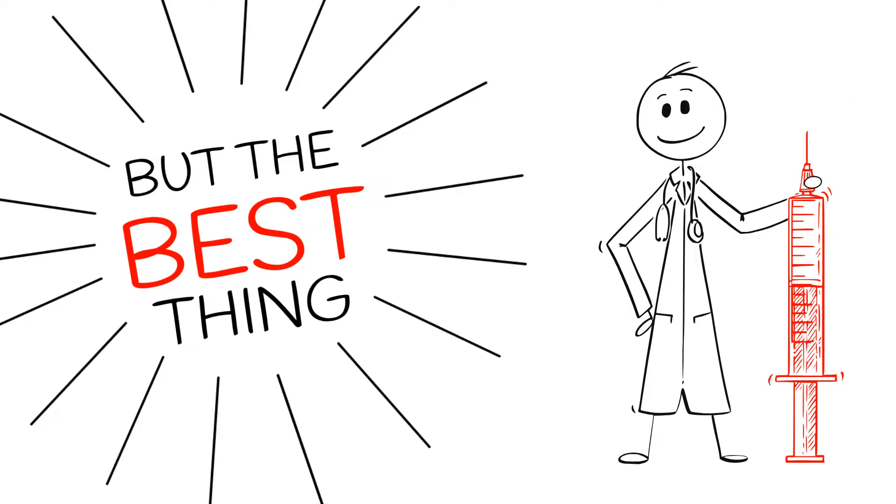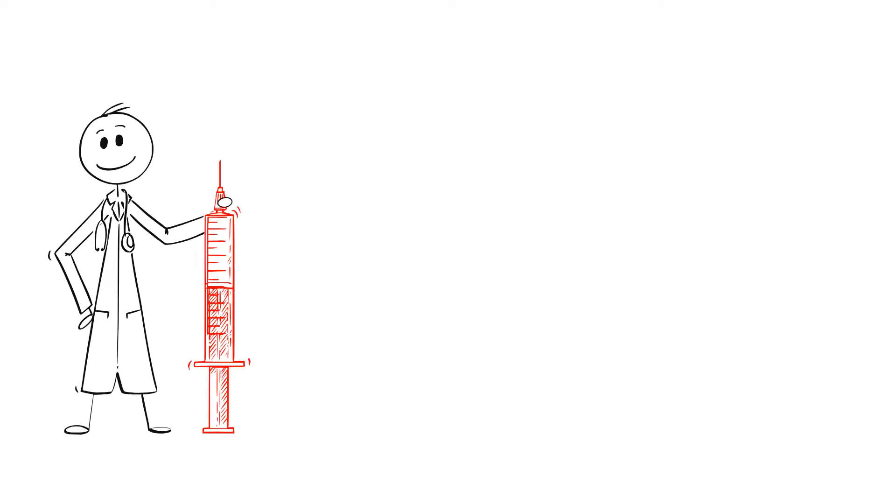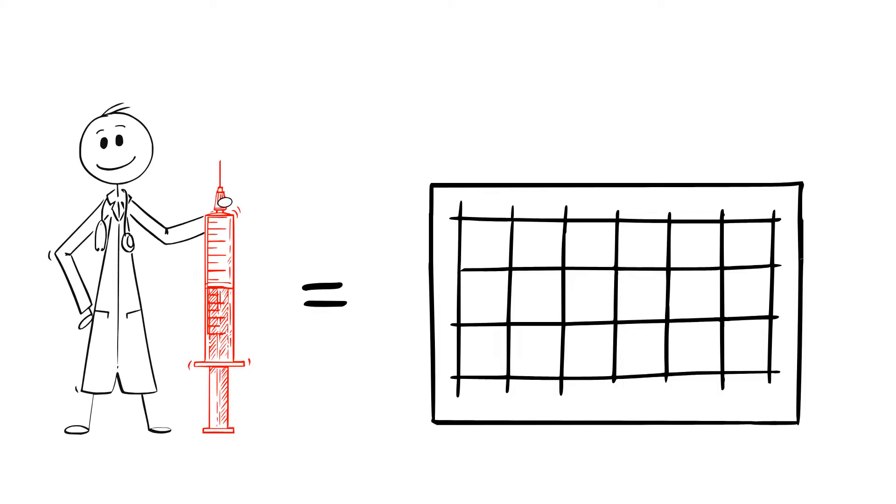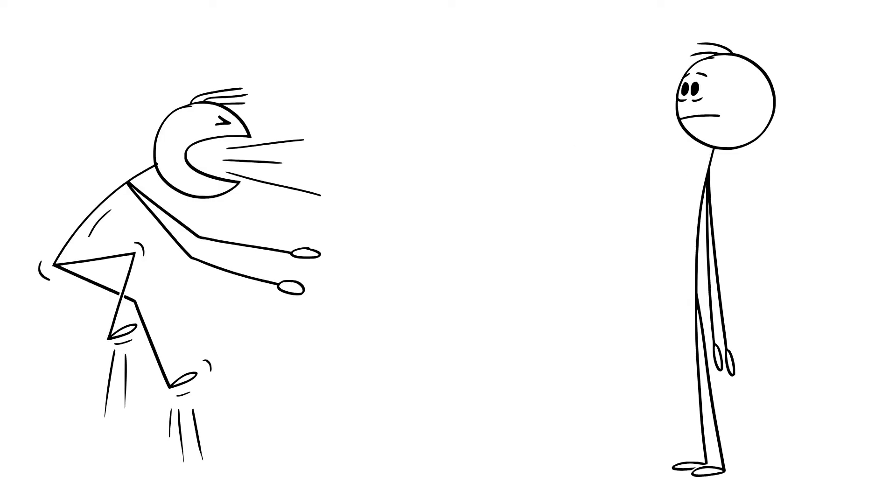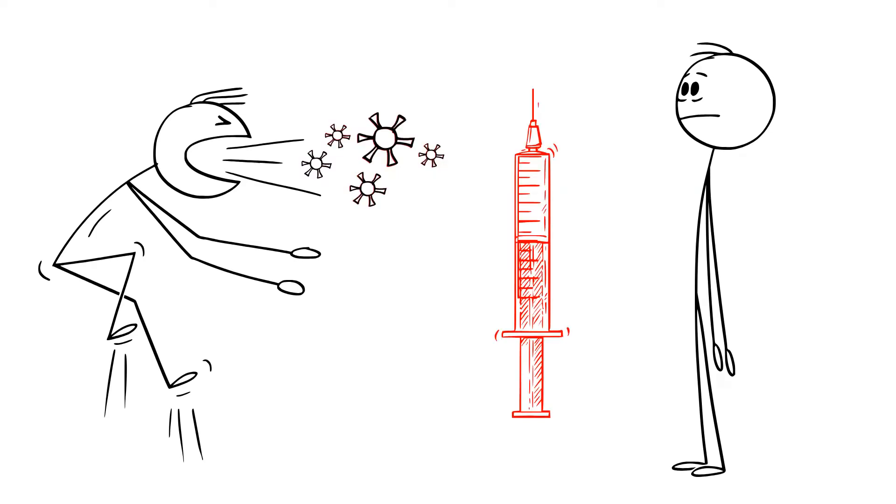But the best thing you can do to protect yourself is to get a flu shot. Even if you get a flu shot, you might still catch the flu. But your chances of getting really sick from it are a lot lower. So are your chances of dying from the flu. It also makes you less contagious or less likely to infect someone else. That's why getting the flu shot is so important.